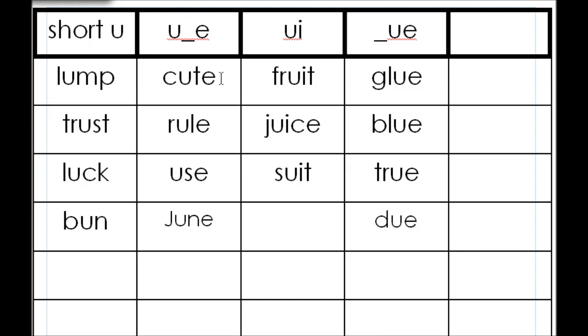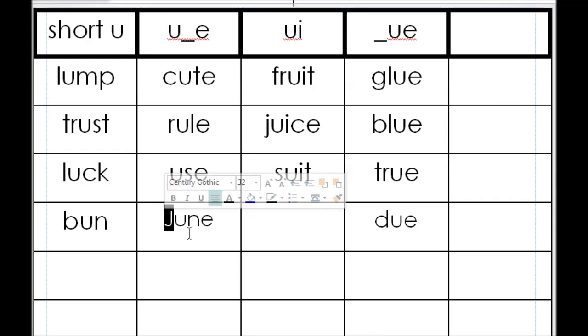And I skipped over our magic E words which are cute, rule, use, and June. Notice June has an uppercase J. I will be looking for that uppercase J any time you write this word. It is a proper noun. It is a month of the year. Sometimes it's a name. But it is a proper noun when referred to it as the month of the year.